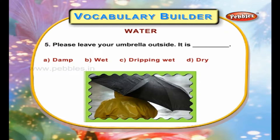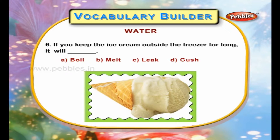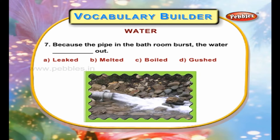Please leave your umbrella outside; it is dripping wet. If you keep the ice cream outside the freezer for long, it will melt. Because the pipe in the bathroom burst, the water gushed out.